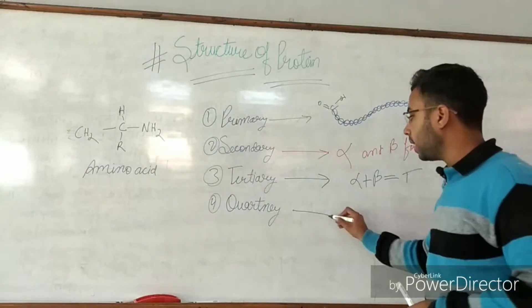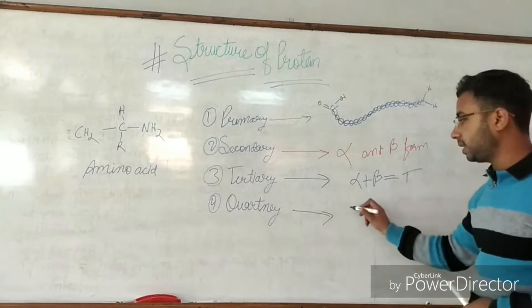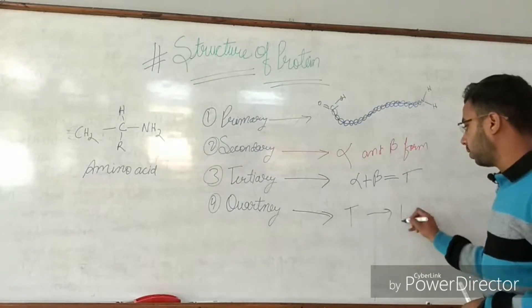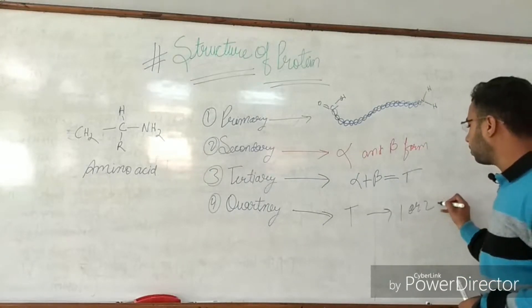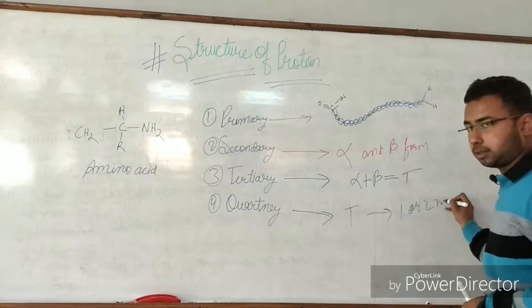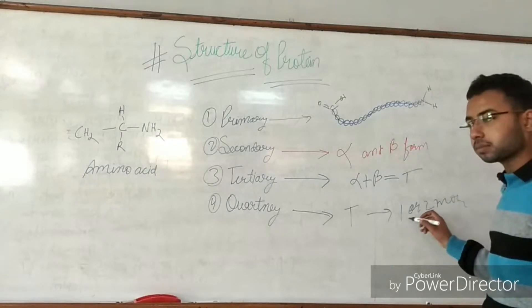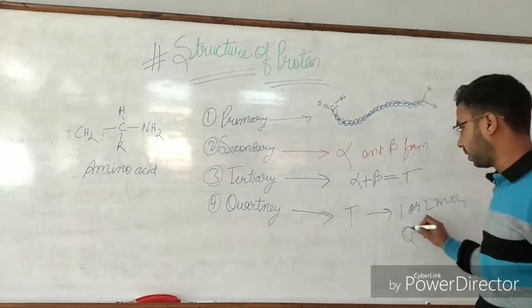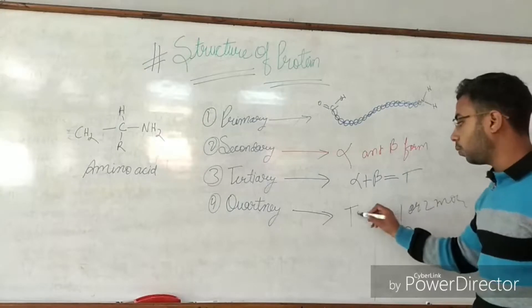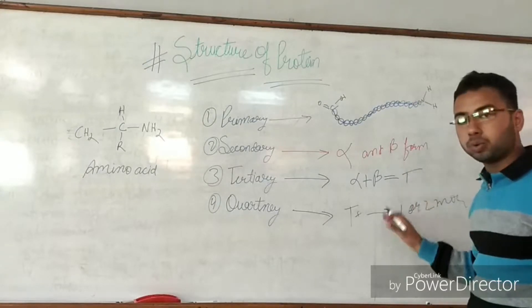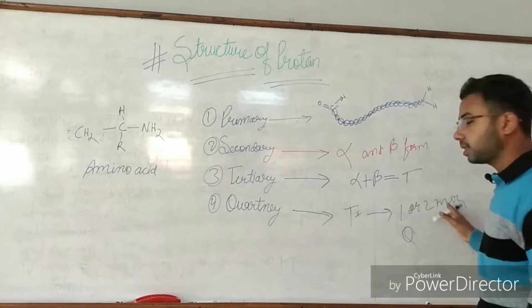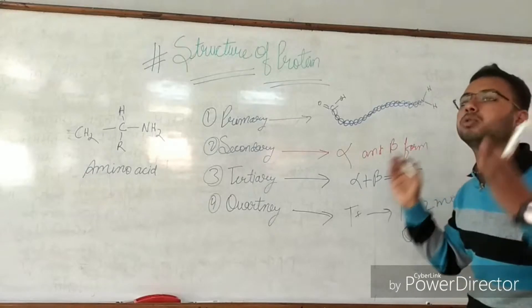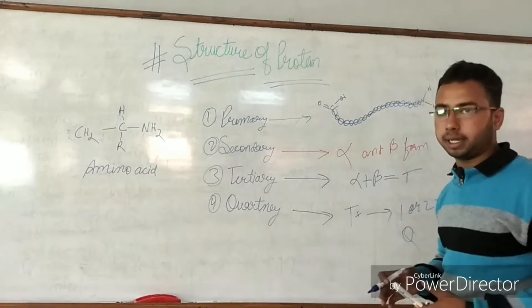The tertiary structure, when one, two, or more than two are combined together, forms a quaternary structure. The quaternary structure is the most complicated, made from one or more tertiary structures combined.